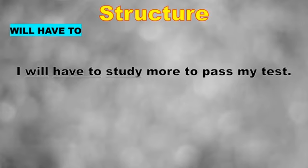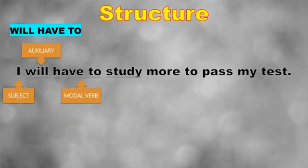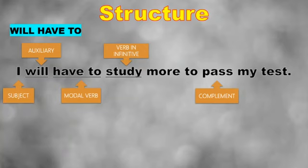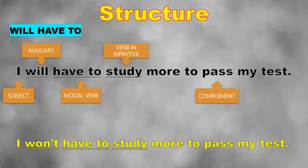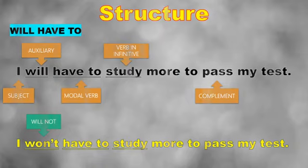Here we have the structure for 'will have to.' The sentence is: 'I will have to study more to pass my test.' You start with your subject — I, you, he, she — plus the auxiliary 'will,' then the modal verb 'have to,' then the infinitive verb, and your complement. In the negative, you say: 'I won't have to study more to pass my test.' 'Won't' is the contraction for 'will not' — you can use either form.